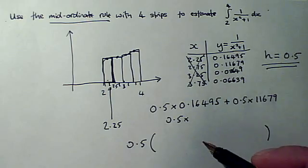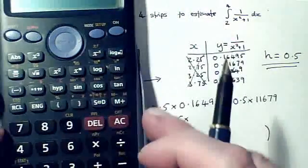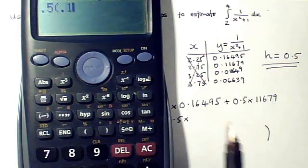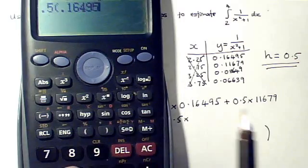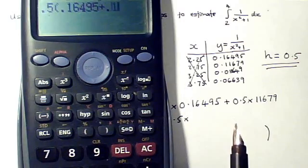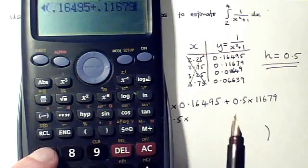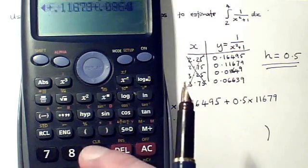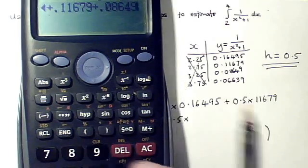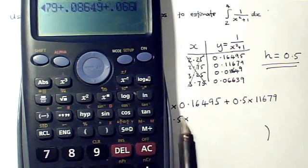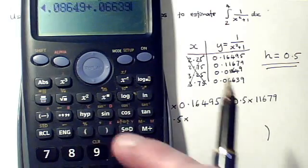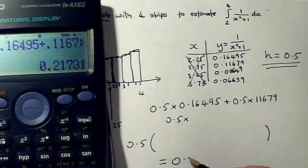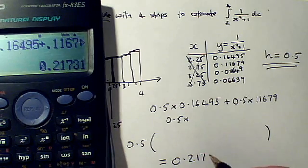But either way will do the trick equally well. I'm going to do the second one just because I'm lazy. 0.5 times a bracket with 0.16495 plus 0.11679 plus 0.08649 plus 0.06639, close brackets, equals, and it's giving me an answer of 0.21731.